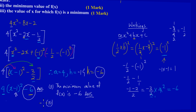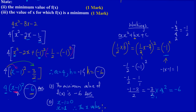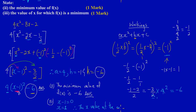For part 3, they ask for the value of x at which the minimum occurs. We take what is inside the bracket — which is (x - 1) — and set it equal to zero: x - 1 = 0. By transposition, x = 1. Therefore, the x value at which the minimum occurs is x = 1.